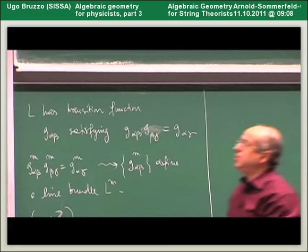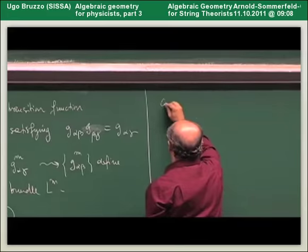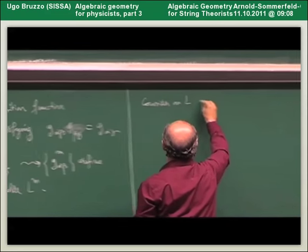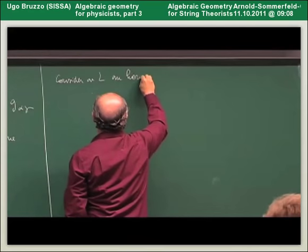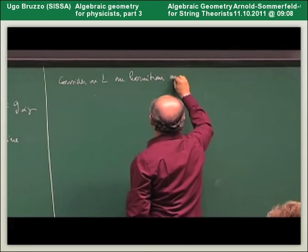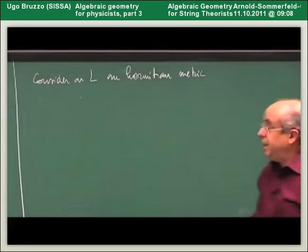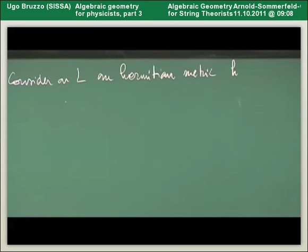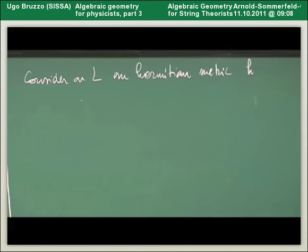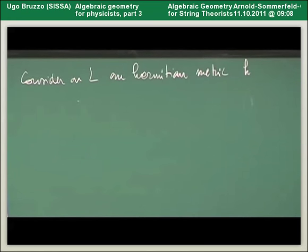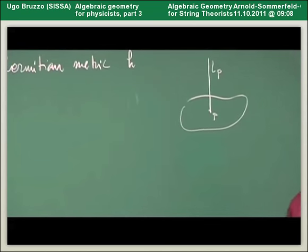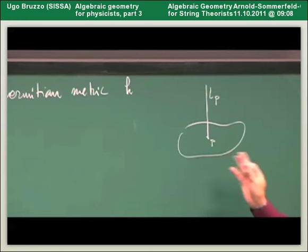The Kodaira Embedding Theorem is stated in terms of a differential geometric criterion. We may consider on L a Hermitian metric. This Hermitian metric will be a function of the base point, because we are choosing a Hermitian metric in every fiber, and we assume this function to be C-infinity.